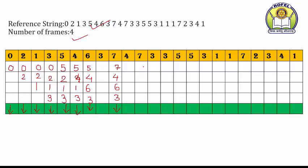Then page number 4 is still in the memory — no page fault. 7 is in the memory — no page fault. Page number 3 is in the memory — no page fault. Now for page number 5, 3 abhi use hua hai, then 7, 4, and 6 — 6 kaafi pahle use kiya tha. So hum 6 ko replace karayenge aur 6 ki jagah page number 5 accommodate karenge. Frames: 7, 4, 5, 3. That is a page fault.